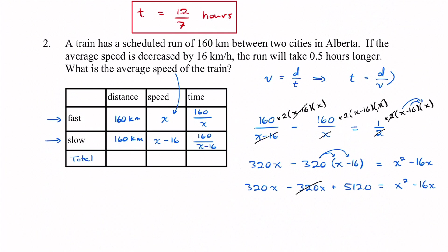These first two terms are going to cancel out. 320x minus 320x, those are gone. Then I'm going to move everything to the same side. So I'm going to move this to the other side. And when it moves over it's going to become a negative 5,120. So I have zero over here, and then I got x squared minus 16x minus 5,120.